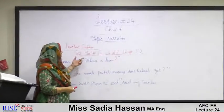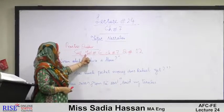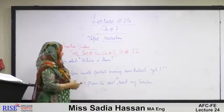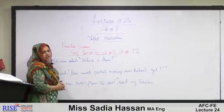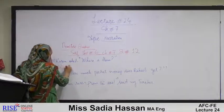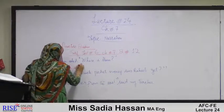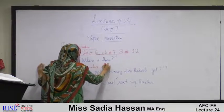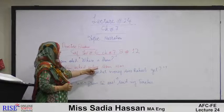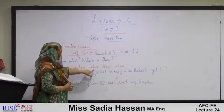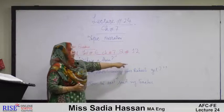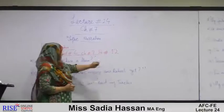Now practicing question number 12 from self-test number 6, chapter 7. These are more narration practice sentences. Sentence a: Karim asked, 'Where is Moeen?' Changes to: Karim asked where Moeen was. The interrogative sentence becomes declarative — 'where' remains unchanged, no 'that' is added in wh-questions, and there is no question mark at the end.